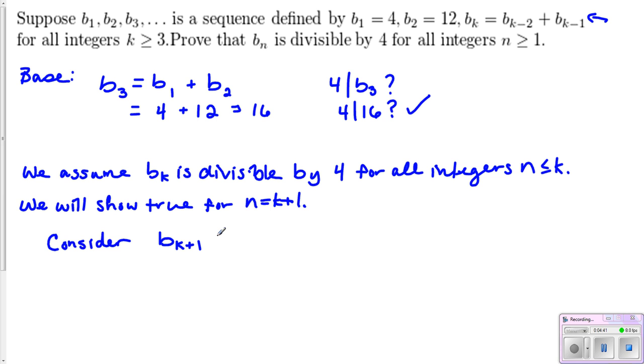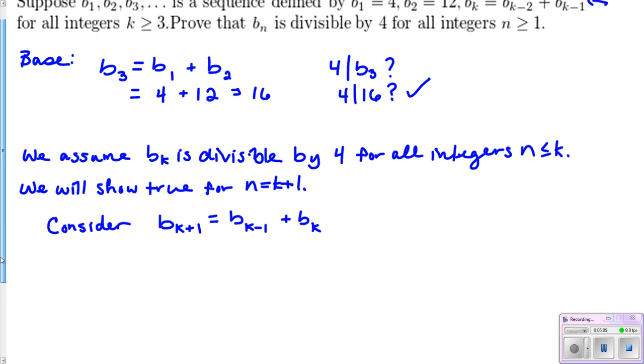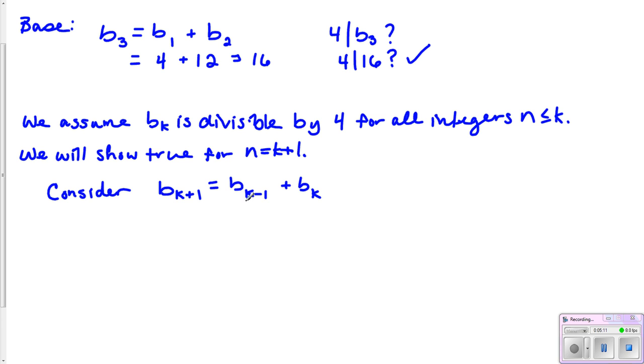Let's go ahead and consider for a moment B_{k+1}. Now, we know that B_{k+1} is equal to the two previous terms added together. So B_{k+1-2} is B_{k-1} plus B_{k+1-1} is just B_k. And earlier, by hypothesis, we said that as long as n is less than or equal to k, 4 divides those values. So in other words, by hypothesis, we can say that B_{k-1} and B_k are both divisible by 4.